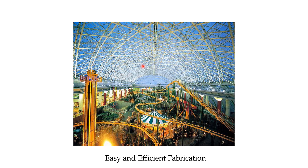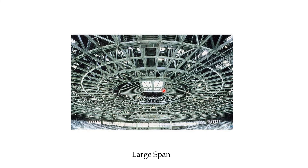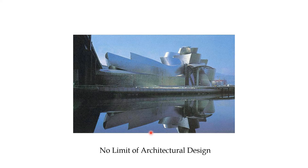Steel structures allow easy and efficient fabrication. If you imagine building the same large-span structure in concrete, you would need heavy concrete slabs, heavy beams, and a lot of labor and machinery. But with steel structures we can achieve large spans easily. A common example of large spans in daily life is marriage halls. Stadiums with large spans are another great example. Here you can see a two large halls without any column inside.